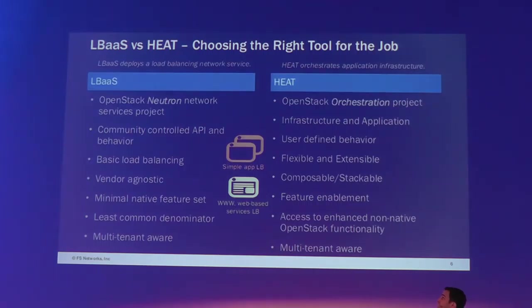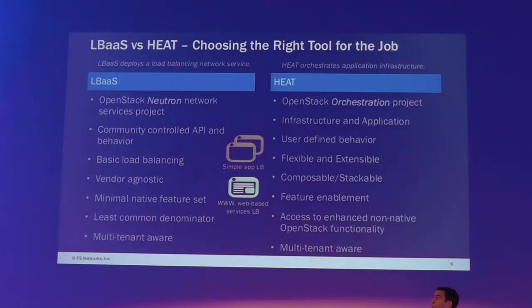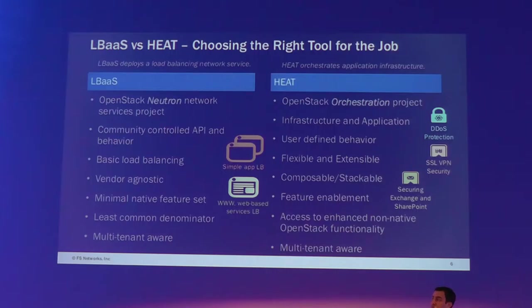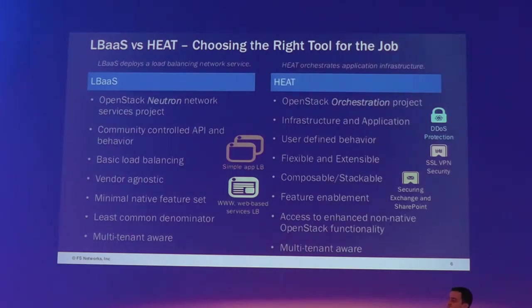To explain when you would use LBaaS versus HEAT within F5 solutions: when you do something like a simple TCP application load balance, you could do that with LBaaS. When you want to load balance a web portal or a secure web portal using HTTPS, you could also do that with LBaaS. But if you want to deploy advanced DDoS protection, or VPN based on SSL or IPsec, or deploy your Microsoft applications like SharePoint or Exchange — which have very complicated configurations — it's good to have HEAT to automate those.